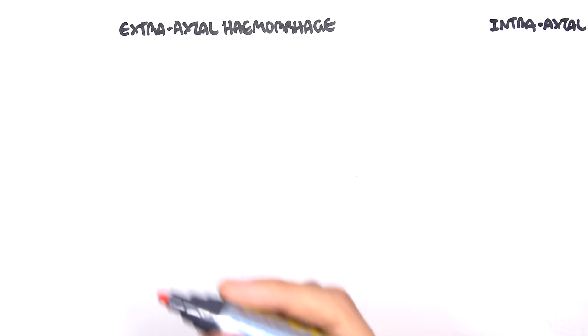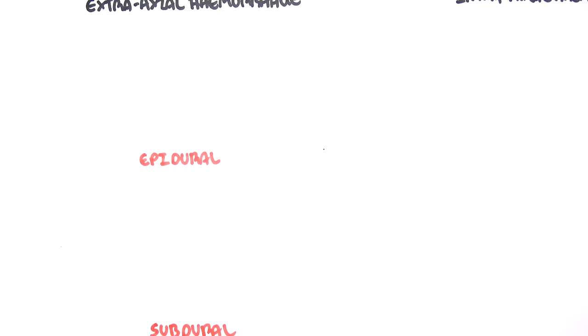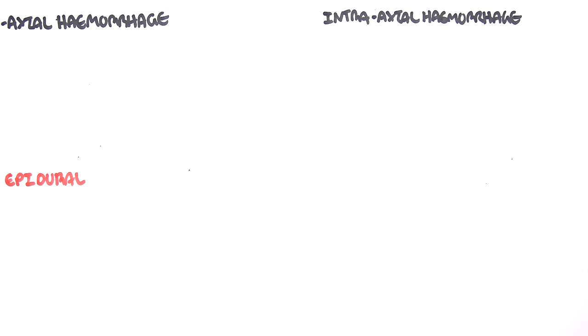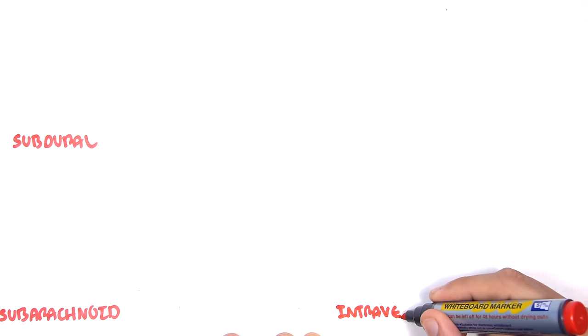Some examples of extra-axial hemorrhage include epidural, subdural, and subarachnoid hemorrhages. Examples of intra-axial hemorrhage, meaning hemorrhages that occur within the brain tissue, include intracerebral hemorrhage and intraventricular hemorrhage.